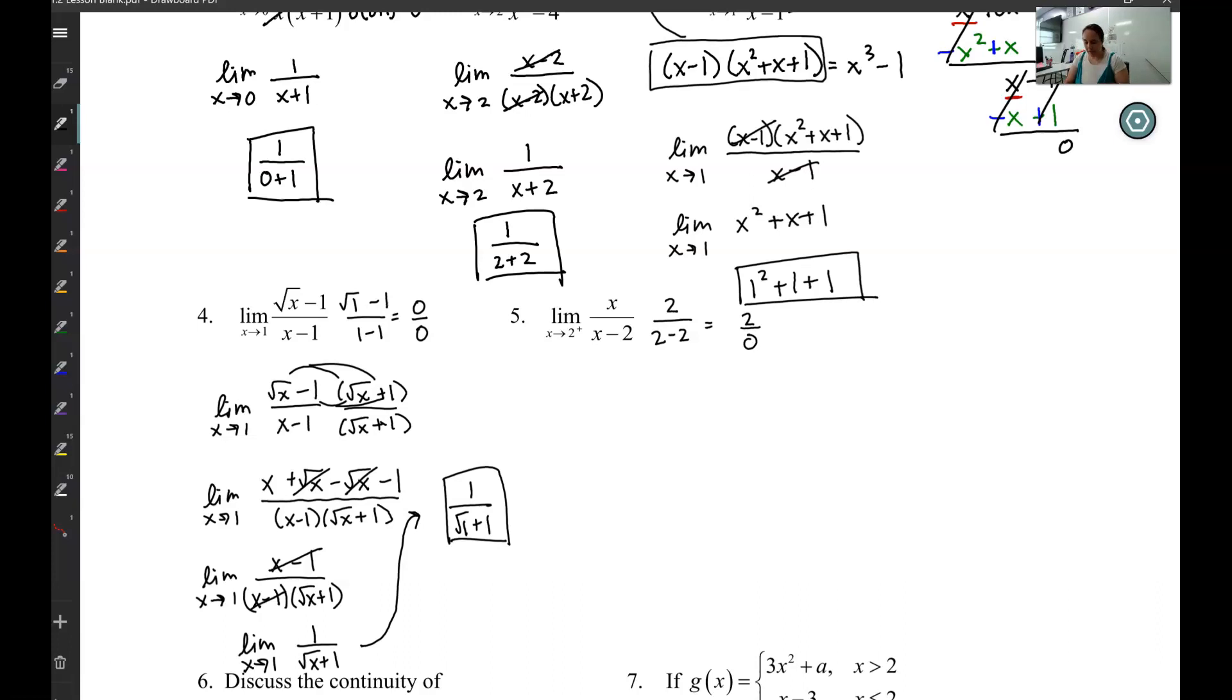And we stop right here because that is not our indeterminate form. 0 over 0 is our indeterminate form. This is a vertical asymptote, not a hole. So because this is not our indeterminate form, all we do is write that limit does not exist. We can't do it. And that's all for that one.